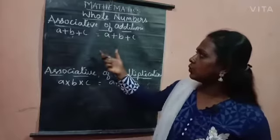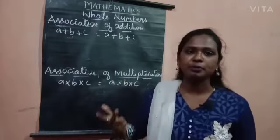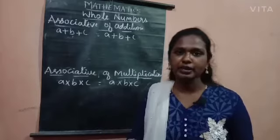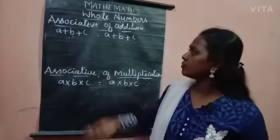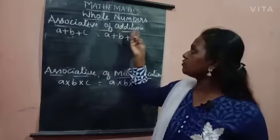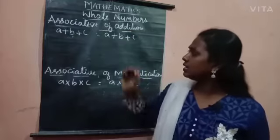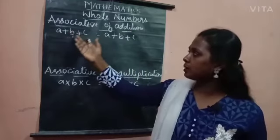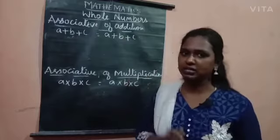Here you have to just check whether this property satisfies addition and multiplication. So you have associative of addition. Here I have A plus B plus C is also equal to A plus B plus C.